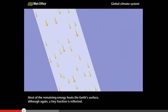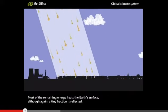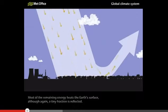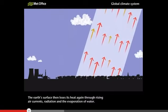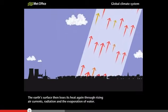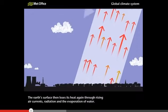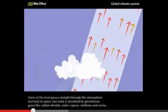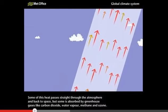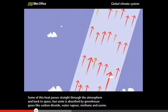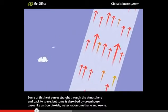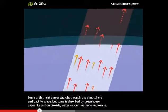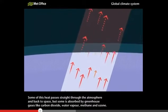Most of the remaining energy heats the Earth's surface, although a tiny fraction is reflected. The Earth's surface then loses its heat again through rising air currents, radiation and the evaporation of water. Some of this heat passes straight through the atmosphere and back to space, but some is absorbed by greenhouse gases like carbon dioxide, water vapour, methane and ozone.